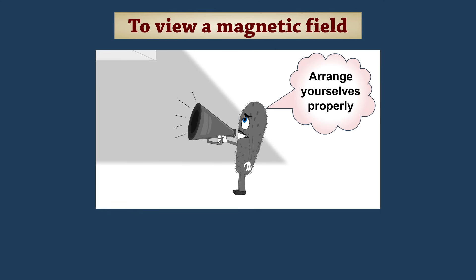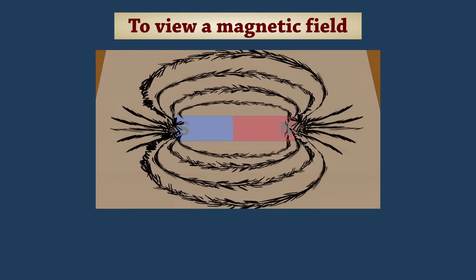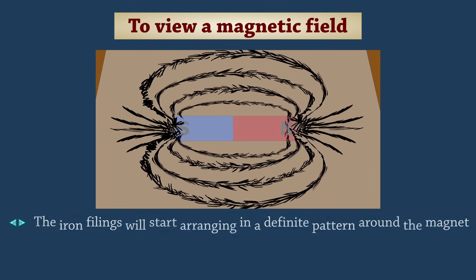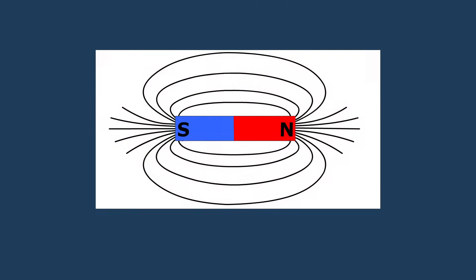Arrange yourselves properly. The iron filings will start arranging in a definite pattern around the magnet. This pattern is called a magnetic field. The lines along which the iron filings arrange are called magnetic field lines.